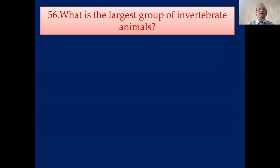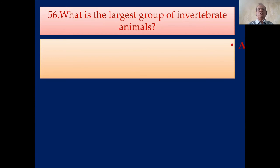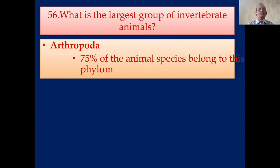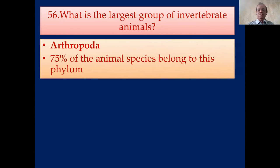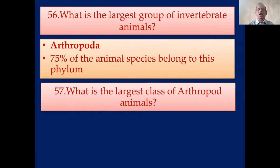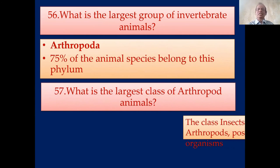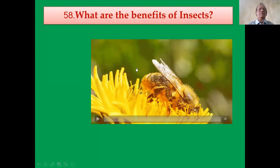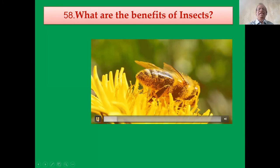What is the largest group of invertebrate animals? Definitely arthropods — 75% of animal species belong to this phylum. What is the largest class of arthropod? Definitely insects. The class Insecta of Phylum Arthropoda possesses the highest number of organisms. Insects are sometimes harmful and sometimes helpful.